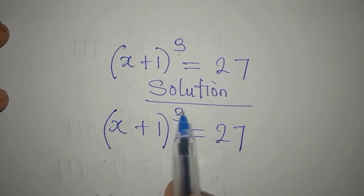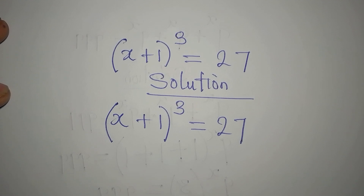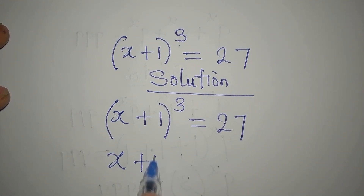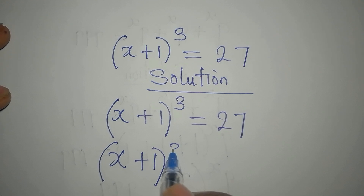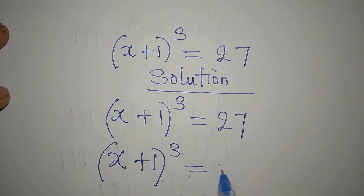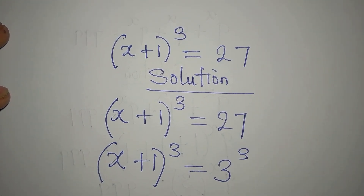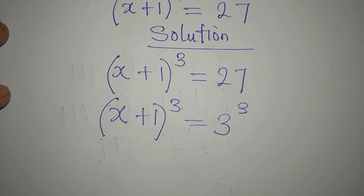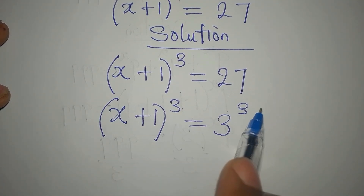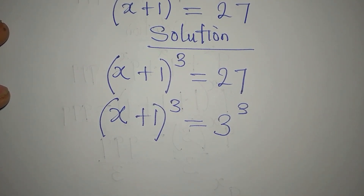The question is: how many solutions are we expecting? Because we have a power of 3, we are expecting 3 solutions. We have (x + 1)³ = 27, which is 3³.